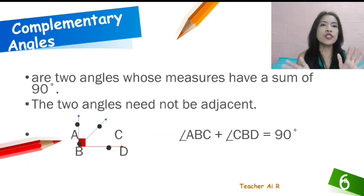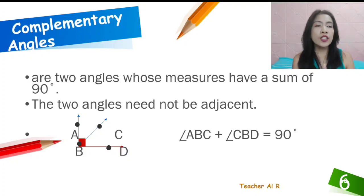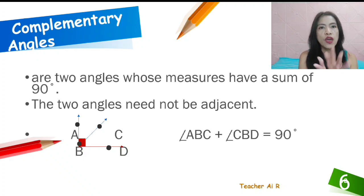Next is we have this complementary angles. They are two angles whose measures have a sum of 90 degrees. Again, complementary angles is 90 degrees. That's the total of the two angles. The two angles need not to be adjacent. Okay, so it's okay if they are different.